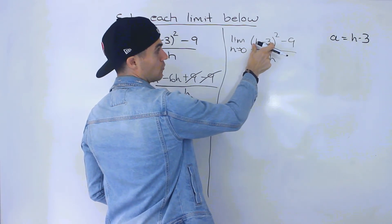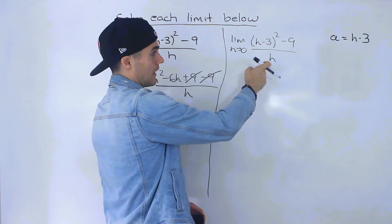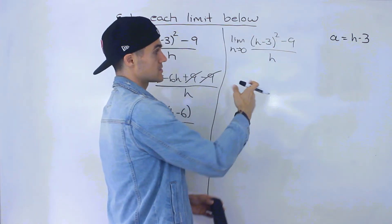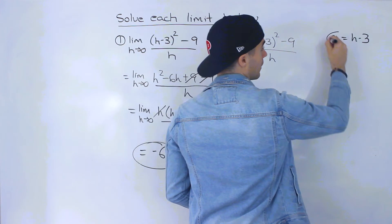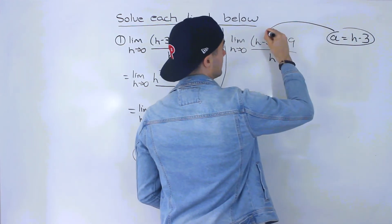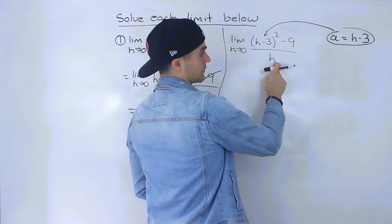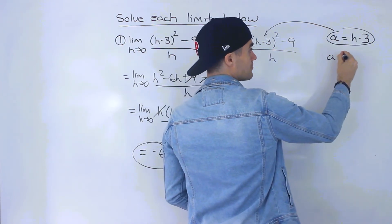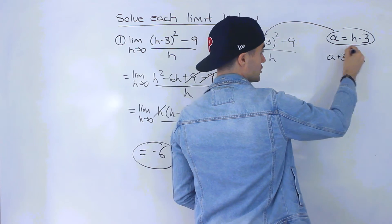And so this whole bracket is going to be a but we also we have to have the whole limit in terms of a. So what we can do is we got one expression here we're going to sub that in there. We have to sub in something for this h and we can get an expression for h by just bringing the negative 3 over. So we'll have a plus 3 equals h. Right so now we could sub in a plus 3 for this h value.